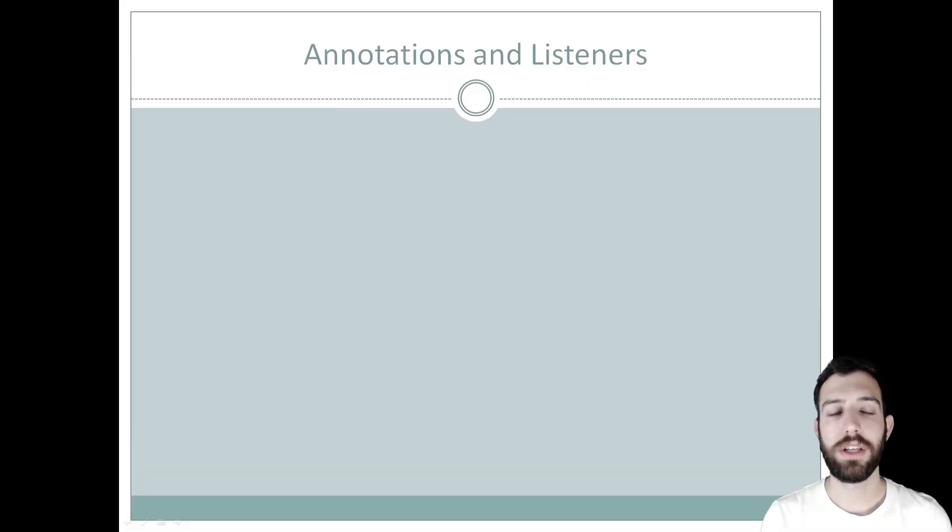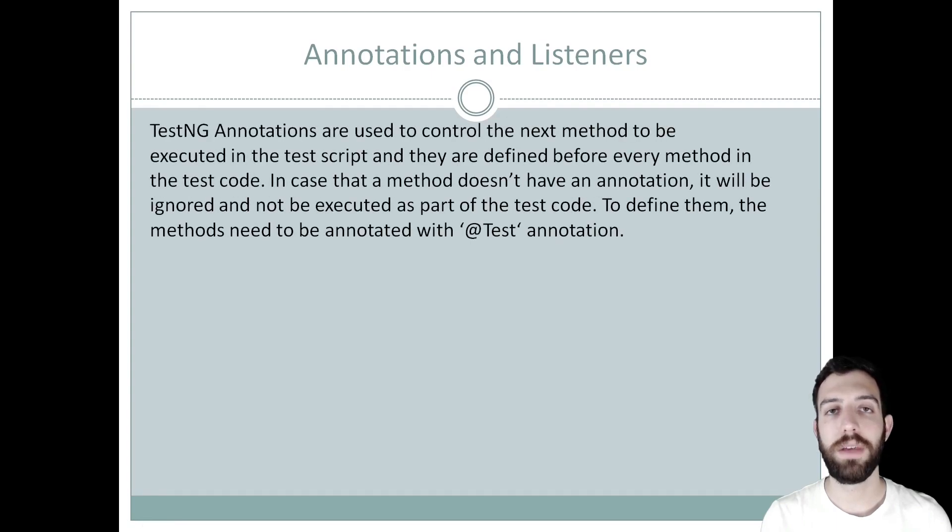TestNG annotations are used to control the next method to be executed in the test scripts and they are defined before every method in the test code. In case the method doesn't have an annotation then it will be ignored and not be executed in the test code. To define them, the method must be annotated with a test annotation.